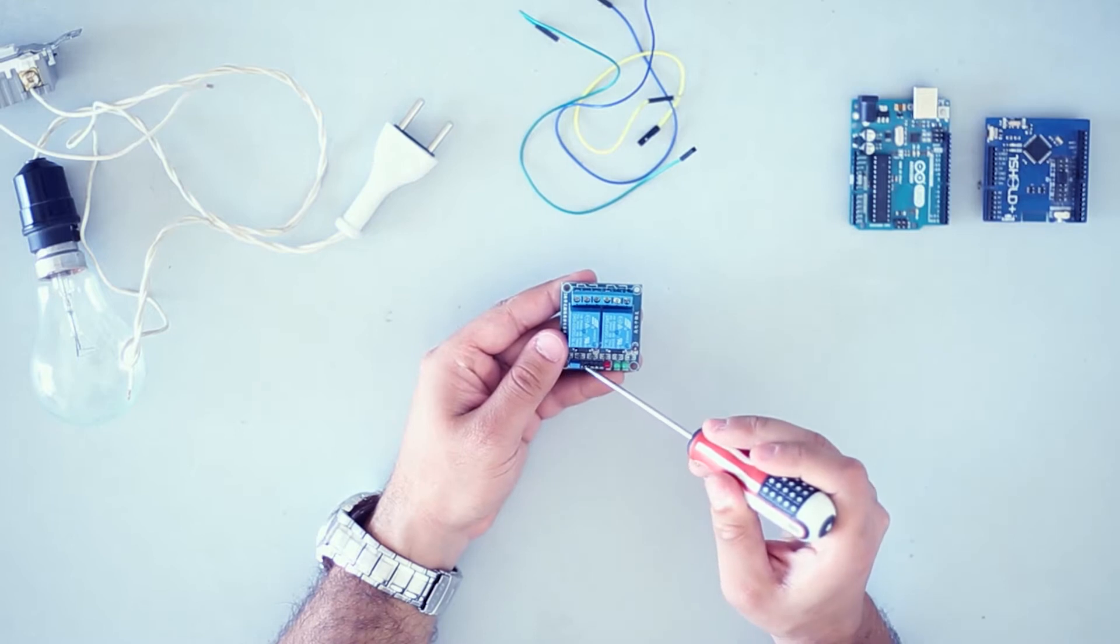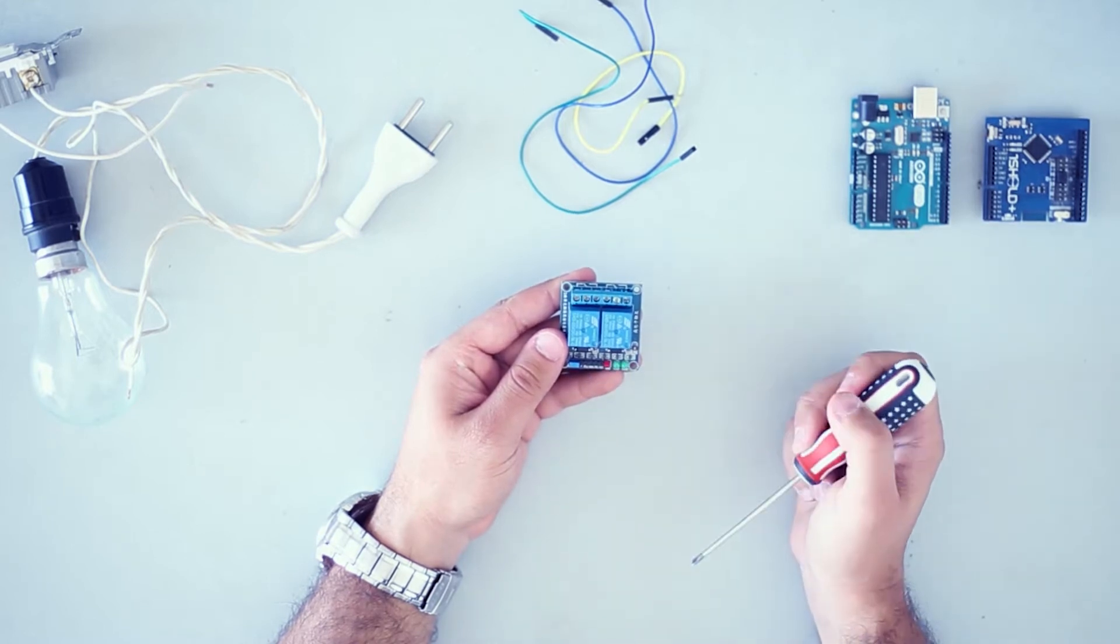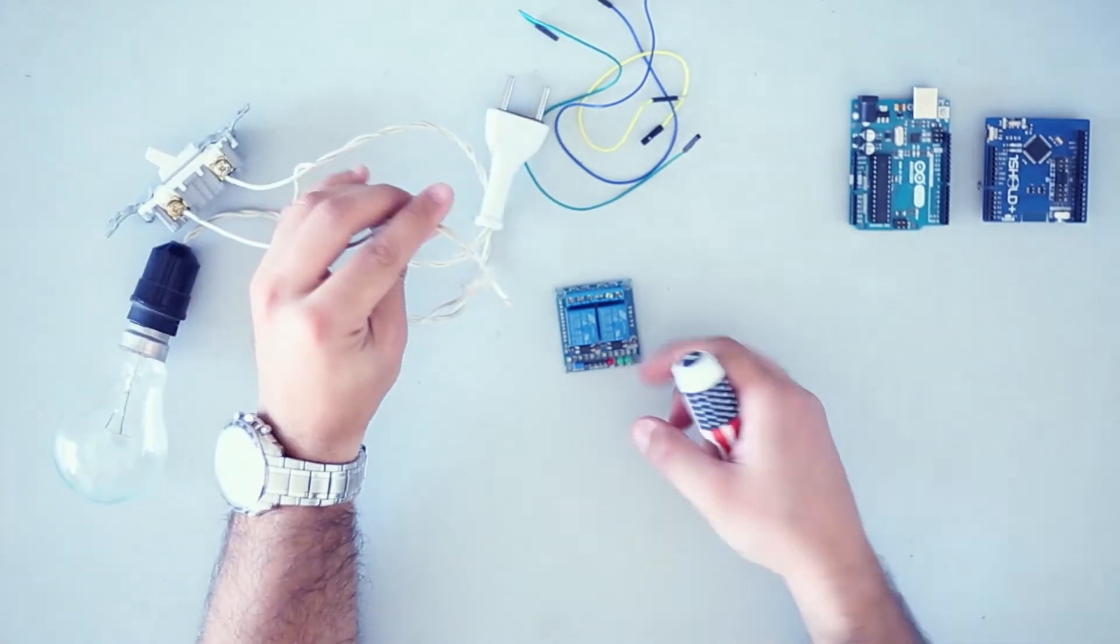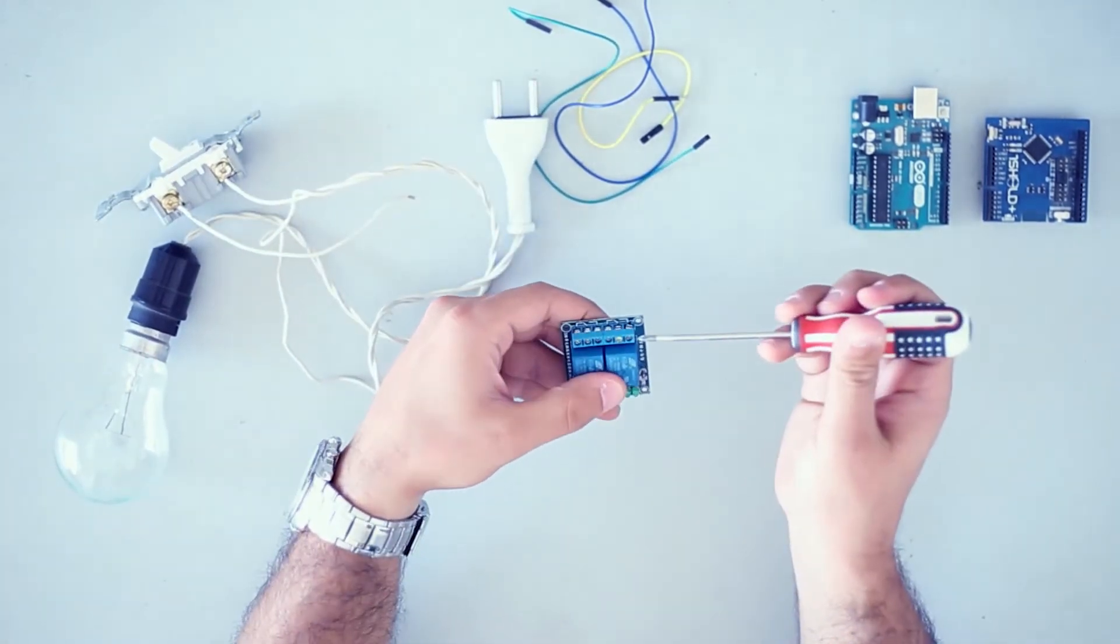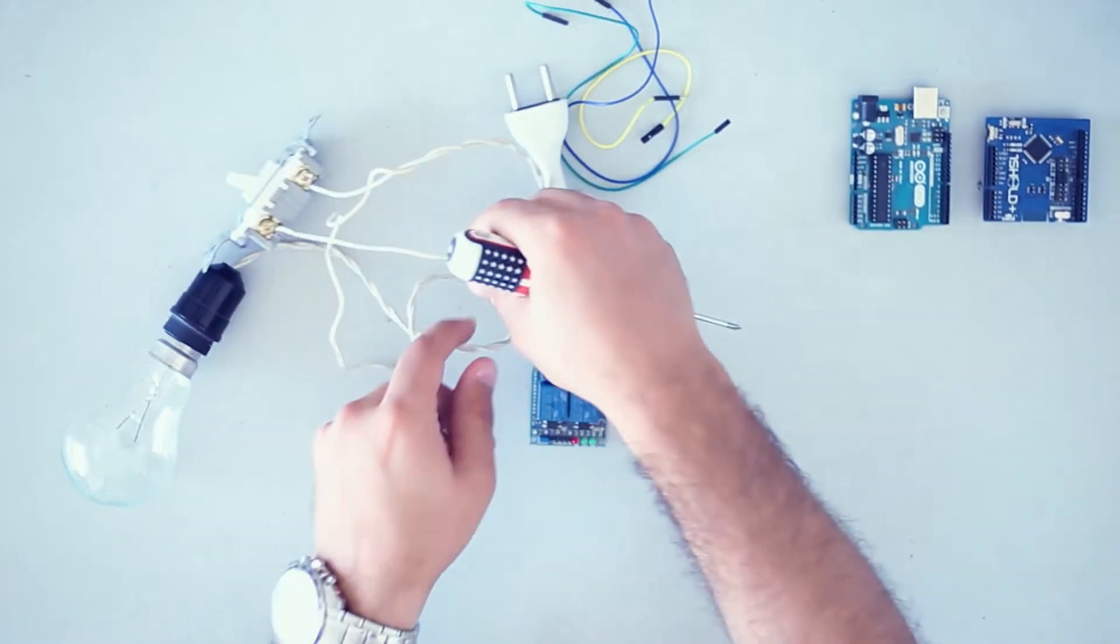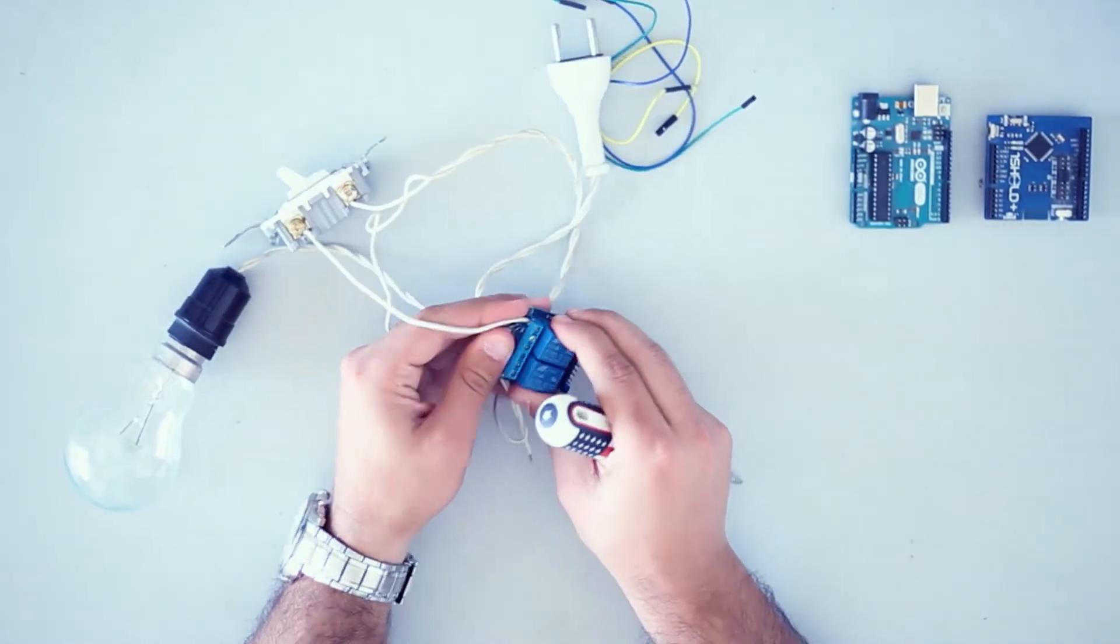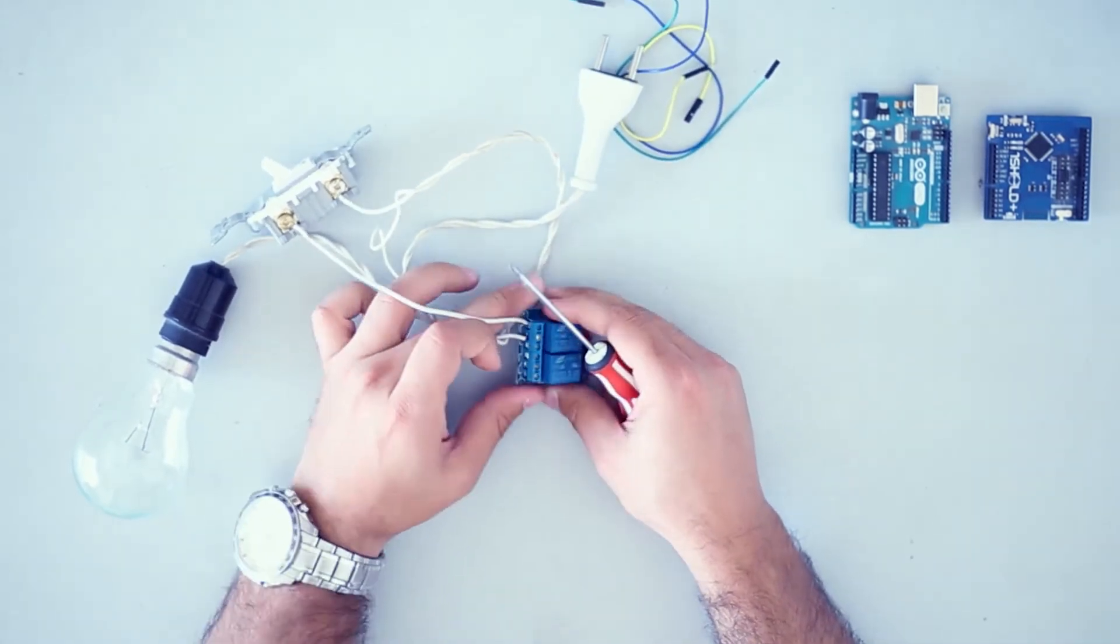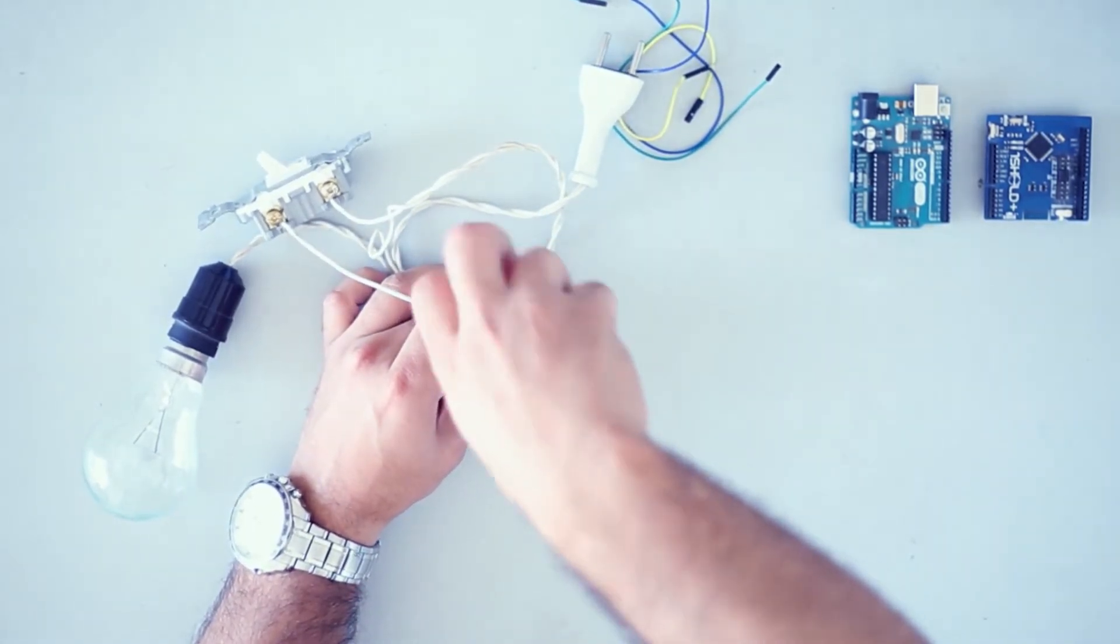The relay board has high voltage power lines, low voltage power lines, and one signal control line. First, I'm gonna connect the light bulb to the relay board on the normally open and common terminals.